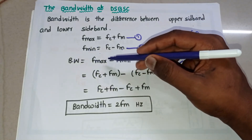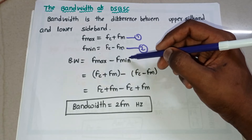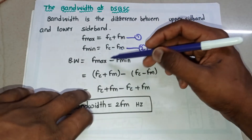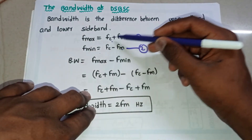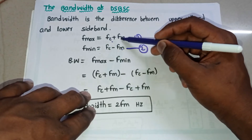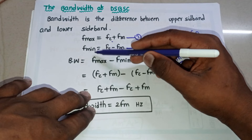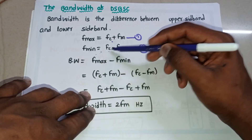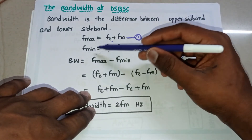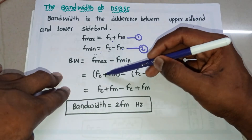f_max is the upper sideband frequency and f_min is the lower sideband frequency. Substituting: f_max = fc + fm and f_min = fc − fm into the bandwidth equation.